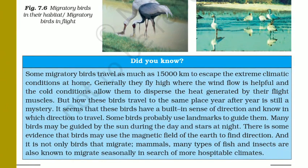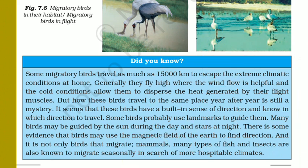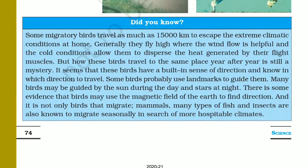If anyone asks how the birds can understand that they need to migrate from that particular place to India every year: research shows that birds can migrate with the help of the magnetic field of the earth. As you know, the earth has its own magnetic field with north and south poles, and similarly, with that magnetic field, birds can find their own directions and easily migrate from one place to another. This is covered on page number 74 in the NCERT book.